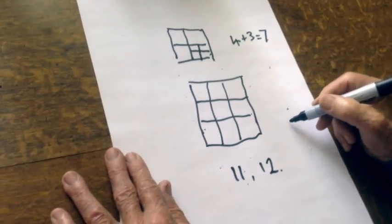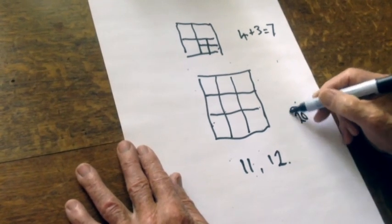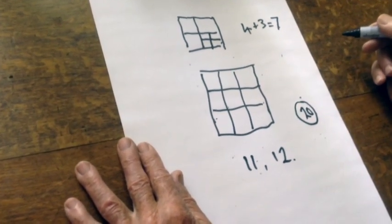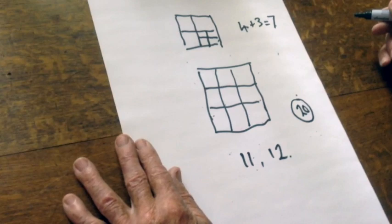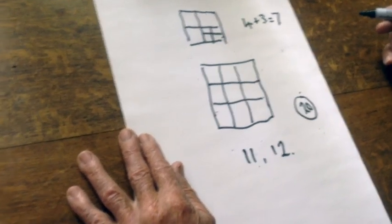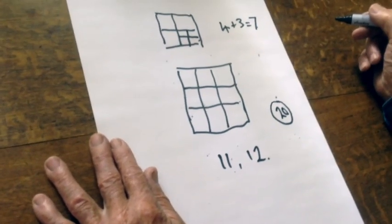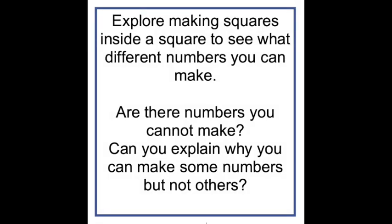Go up to about twenty. Sometimes you can't do it at all and sometimes you can do it in lots of different ways. So you could explore that as well. So with this activity, this is your task. Have fun.